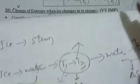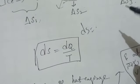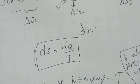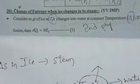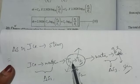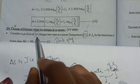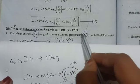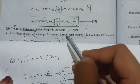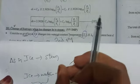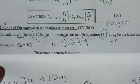Change in entropy when ice changes to steam uses the formula dQ by T. Entropy is a property which remains constant during an adiabatic process. Now, first we will change the ice to water. Consider m grams of ice at T1 Kelvin changes into water at constant temperature T1.